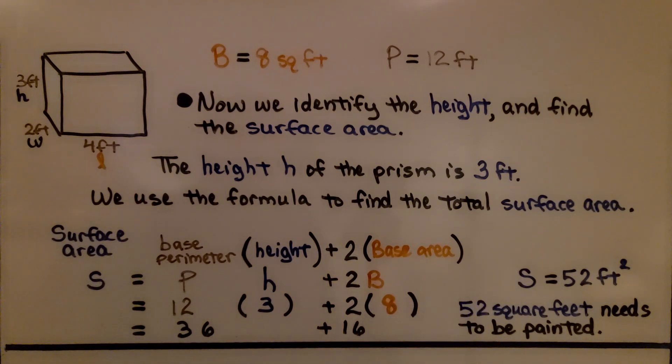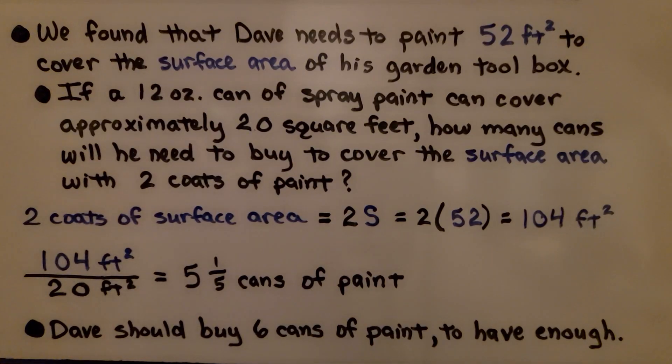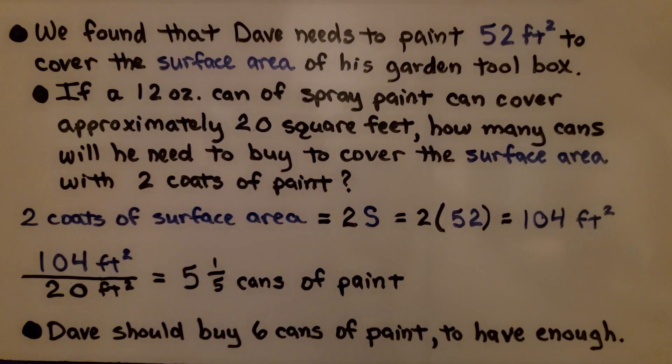The surface area of Dave's garden toolbox is 52 feet squared. That's the surface area that needs to be painted. Dave needs to paint 52 square feet to cover the surface area of his garden toolbox.